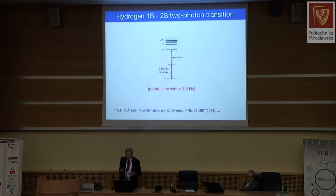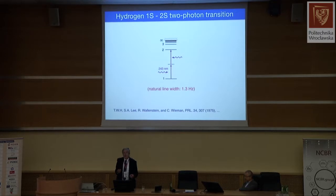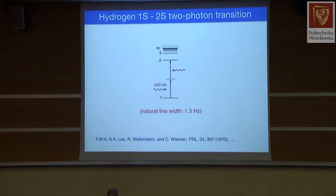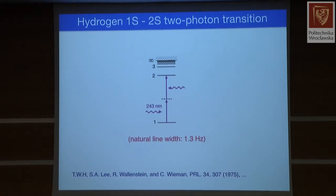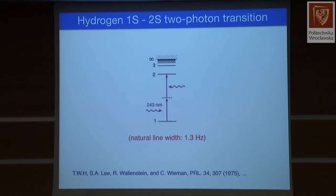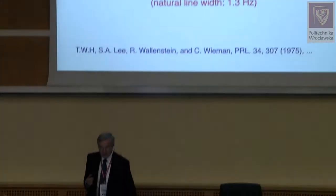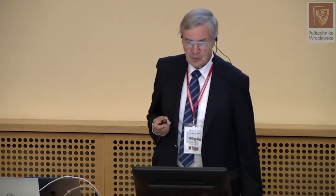One particular transition we concentrated on is the two-photon transition from the ground state of hydrogen to the metastable 2S state, first observed in 1975 with Carl Wieman, one of my early doctoral students, who later won the Nobel Prize for Bose-Einstein condensation of atoms. This transition requires ultraviolet light at 243 nanometers. In principle, using two counterpropagating beams you get rid of first-order Doppler broadening. If you could make the atom stand still, you could hope to observe the natural line width on the order of only one hertz.